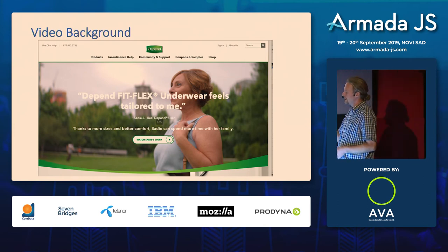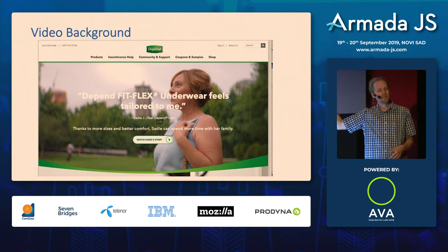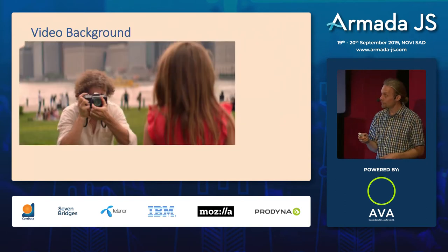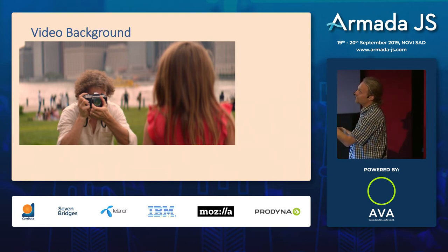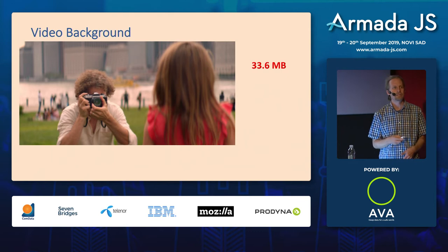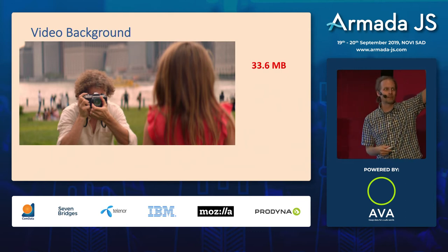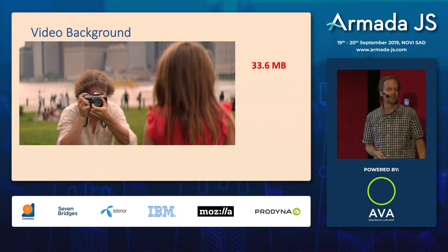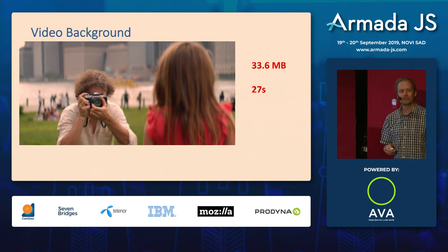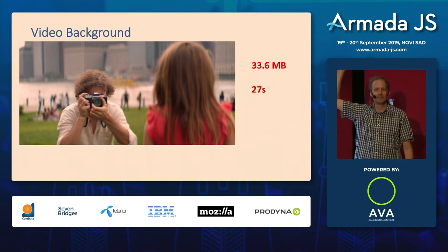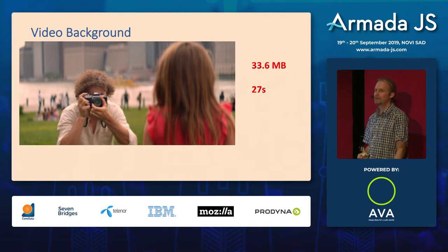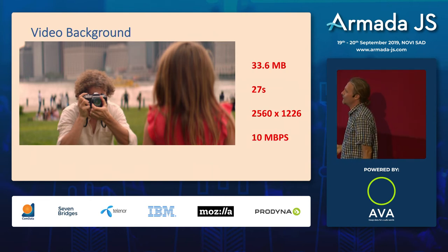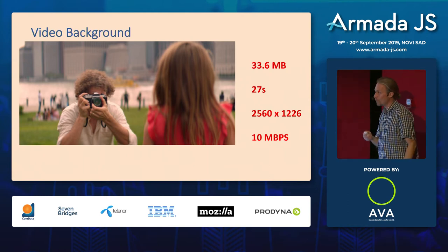Here's another example: a background video that's 33 megabytes. The first thing you learn is that Bob Ross apparently also took photos, because that's what the video shows when it finally loads. It's 27 seconds long — how many people hang out at the top of a webpage waiting for a 27-second background video to download? Not many. And it's 2,500 pixels wide at 10 megabits per second — this video is way too big for mobile or even desktop.